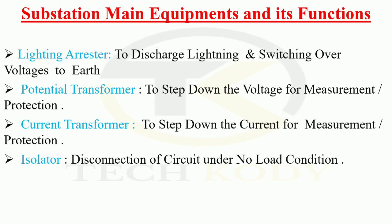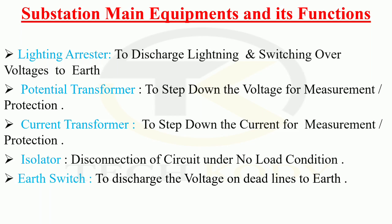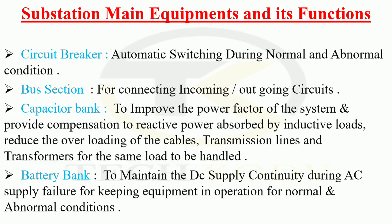Isolator: disconnection of circuit under no load condition. Earth switch: to discharge the voltage on dead line to earth. Circuit breaker: automatic switch during normal and abnormal conditions. Bus section: for connecting incoming or outgoing circuits. Capacitor bank: to improve the power factor of the system, provide compensation to reactive power absorbed by inductive loads, reducing the overload of the cables, transmission lines and transformers for the same load to be handled.